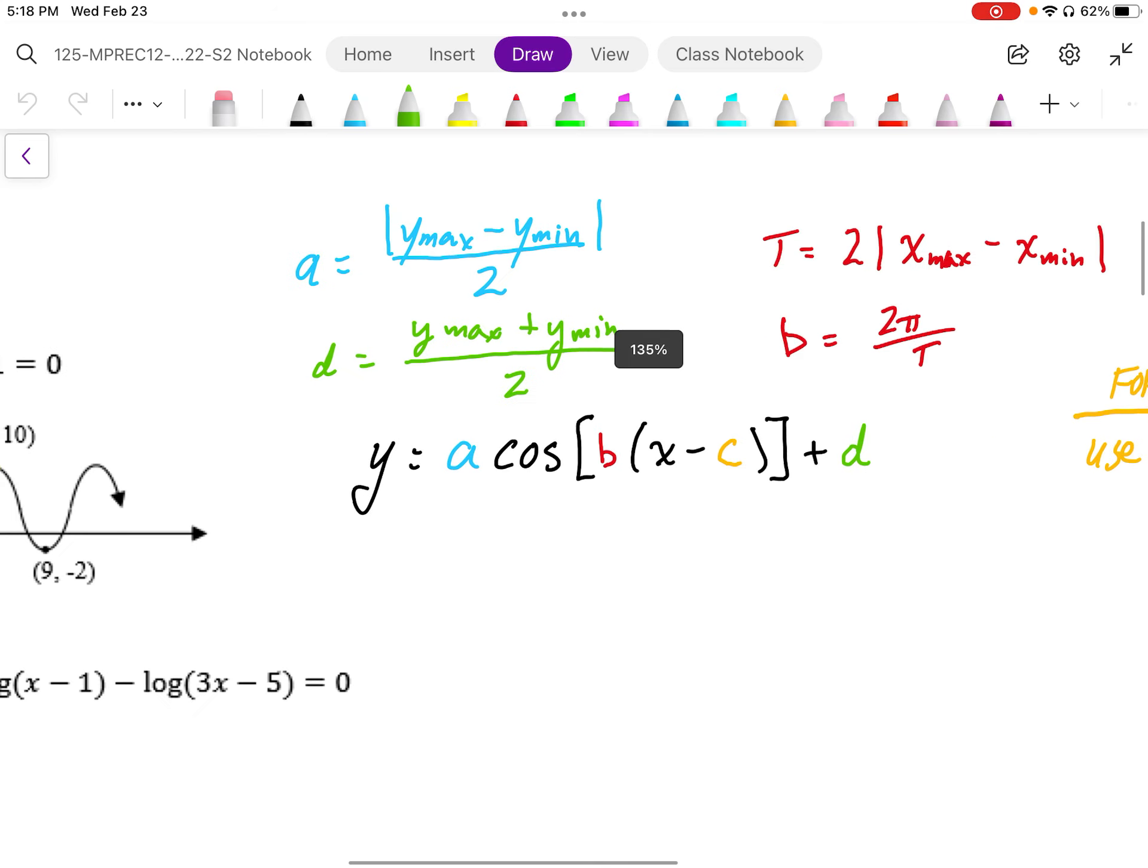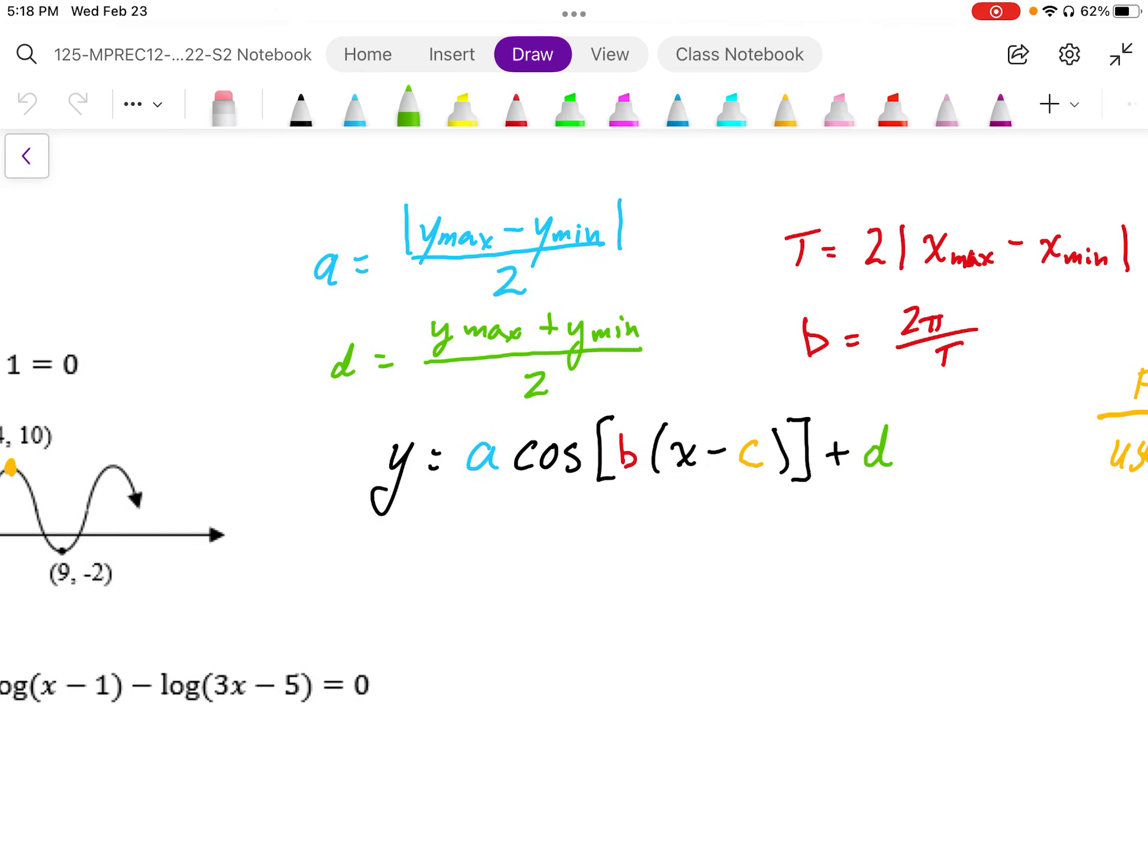So, if we want the amplitude, amplitude is a distance, so what we want to do is subtract. We subtract to get distance on the coordinate plane. So, we subtract the y coordinates, y max and y min. That gives the distance between the max and min. If we divide it by two, we'll be able to calculate the a value, or the amplitude.